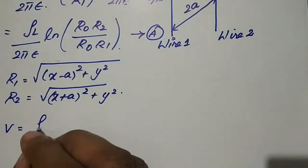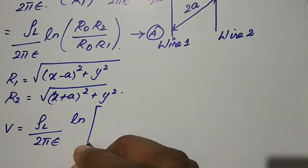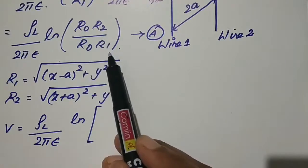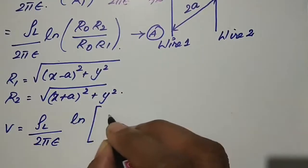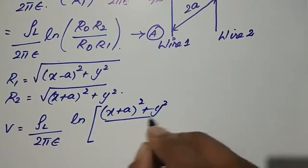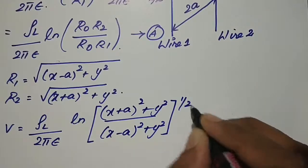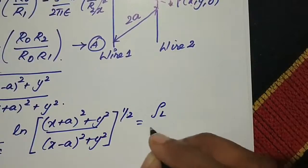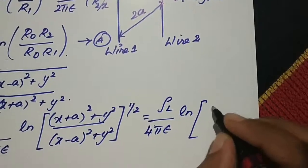Substituting the distance expressions: V = (ρl / 2πε) × ln[√((x+a)² + y²) / √((x−a)² + y²)]. The factor of 1/2 from the square root moves into the denominator, giving V = (ρl / 4πε) × ln[(x+a)² + y²) / ((x−a)² + y²)].